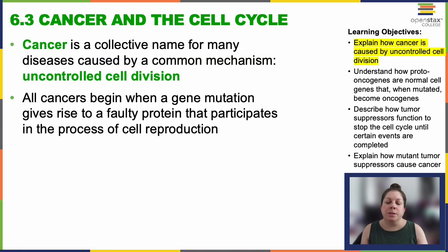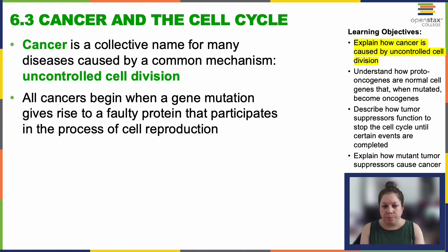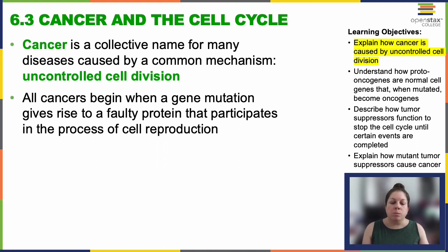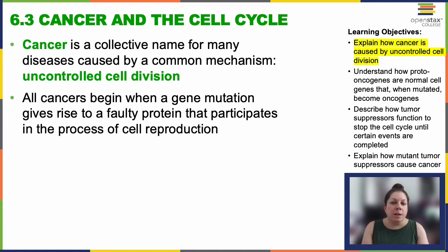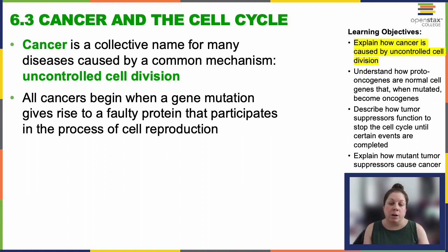Cancer encompasses this huge range of diseases that are all rooted in this shared problem of unregulated cell division. So despite the multiple safeguards in the cell cycle, errors are going to occur. One of the critical checkpoints checks for accurate DNA replication during S phase — that's the G2 phase checkpoint. But even when everything is checked, there's still going to be a certain amount of errors that are missed — little mutations during the replication process that persist into the daughter cell.